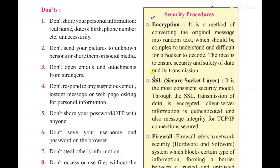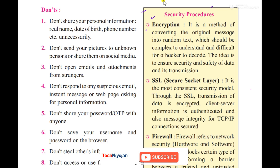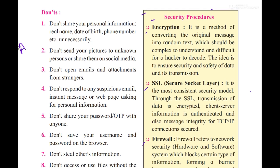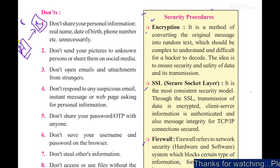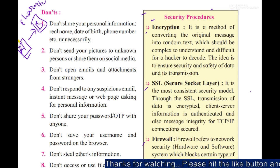Security procedures will start here. In security procedures, three topics are there: encryption, SSL, and firewall. Encryption means to encode data — we will encode text with certain characters, converting it using a particular encoding or character encoding scheme, you can say an encryption algorithm.